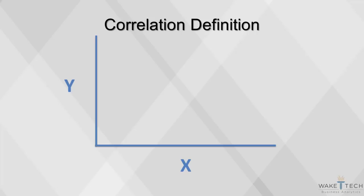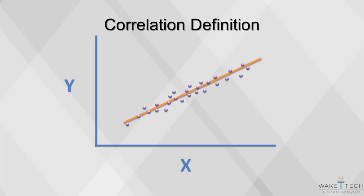Correlation is one of the most common and useful statistics. It's a measure of association — a single number that describes the degree of relationship between two variables. We can examine correlations between two variables heuristically by looking at a scatter chart. In this chart, our observations are very tightly centered around the line. We would say that the relationship between x and y is more correlated — a strong correlation.